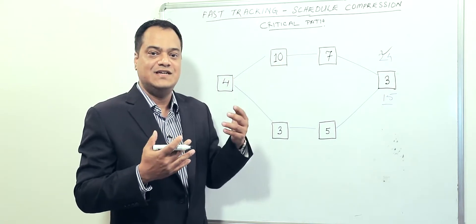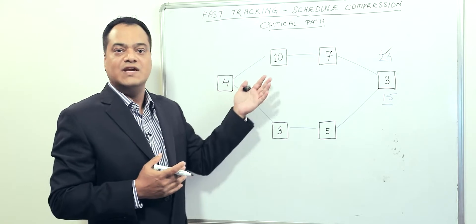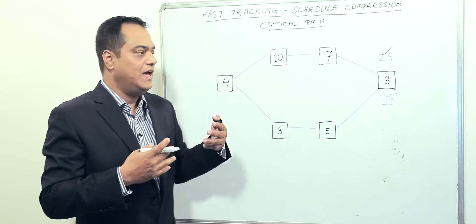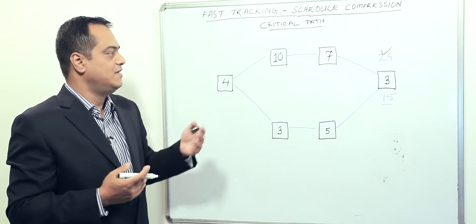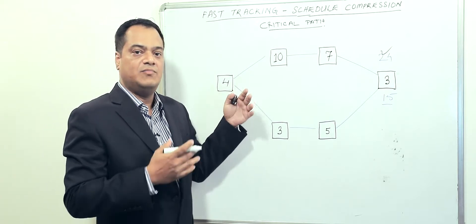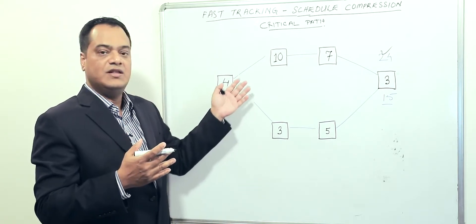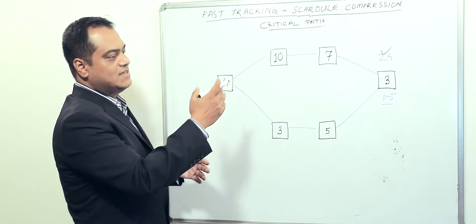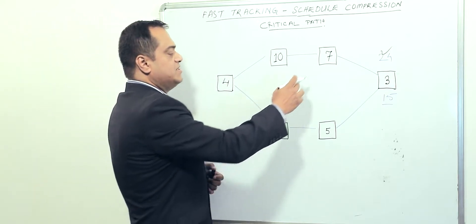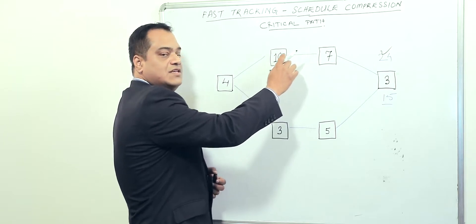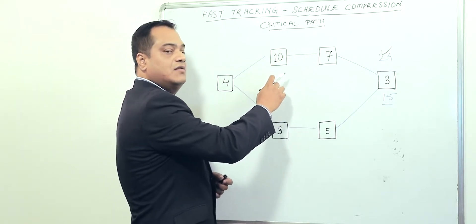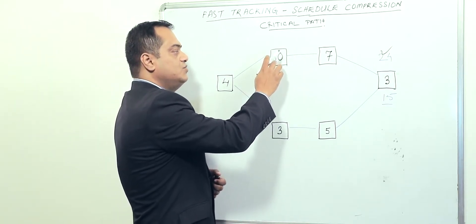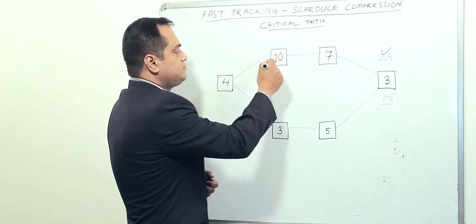See if we can break one of the activities from the path and make it a different path, breaking the original sequence. If we look into this example, let's say number seven can go out of the sequence and run in parallel to this activity.